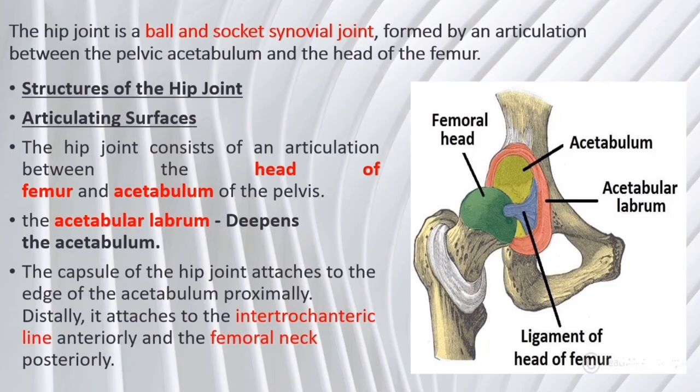The hip joint is a ball and socket synovial joint, formed by an articulation between the pelvic acetabulum and the head of the femur. It forms a connection from the lower limb to the pelvic girdle, and thus is designed for stability and weight bearing, rather than a large range of movement. In this video, we shall look at the anatomy of the hip joint, its articulating surfaces, ligaments and neurovascular supply.